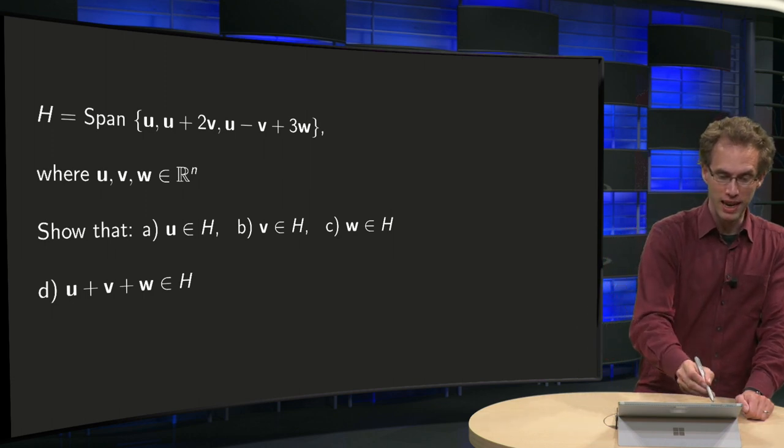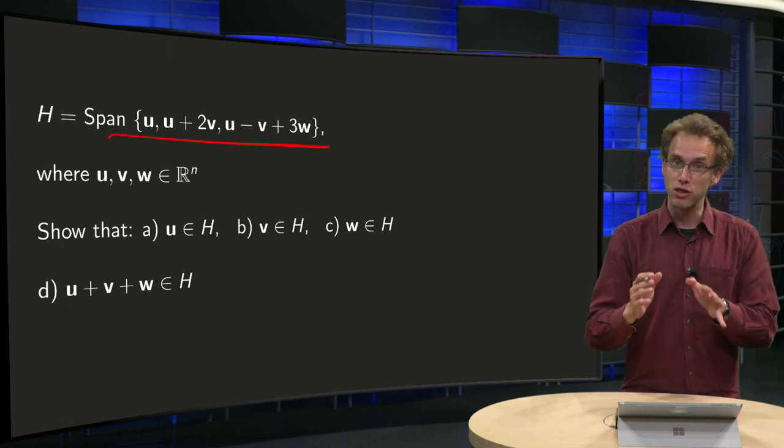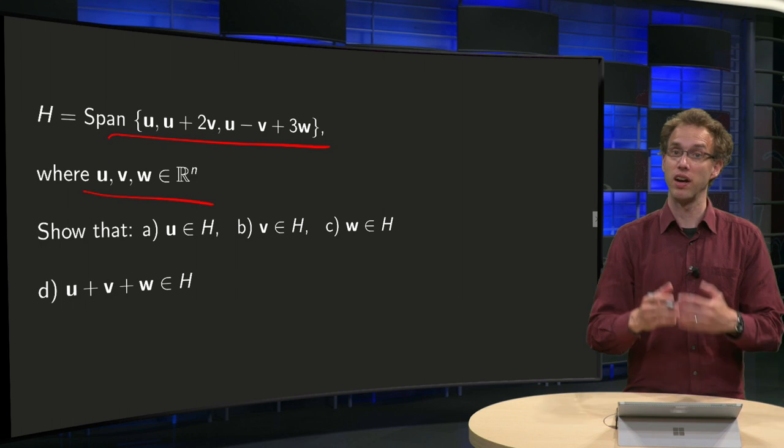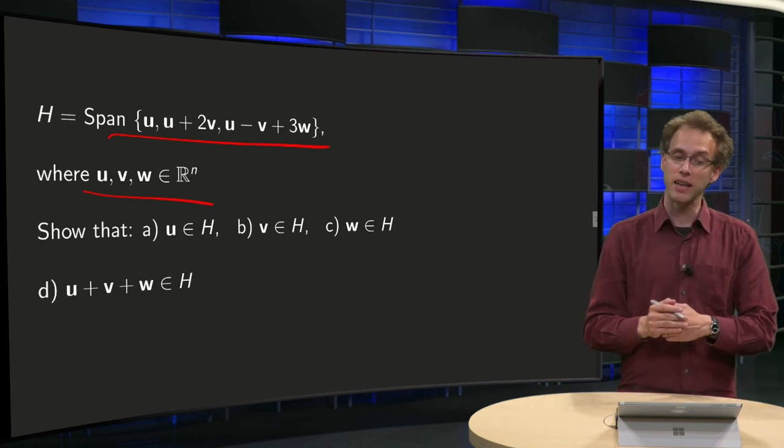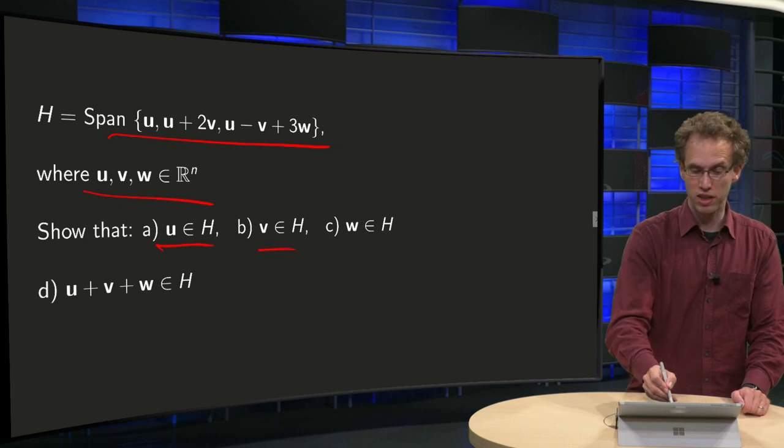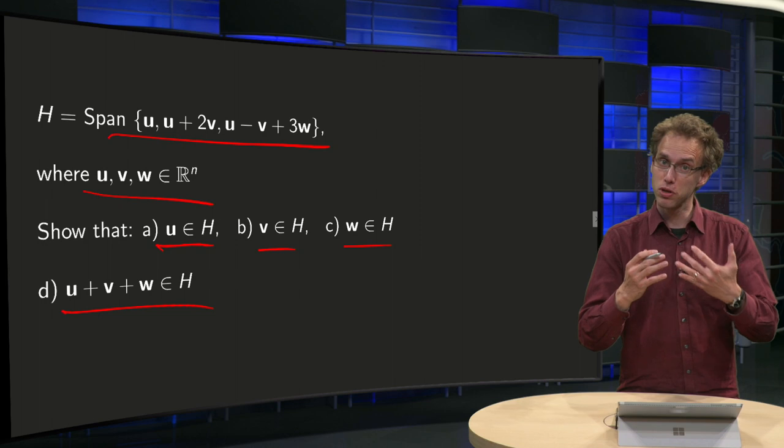You have a subspace H given by the span of some vectors. Vectors U, V and W are not specified, only given that they are in Rⁿ. And then the question shows that U is in H, V is in H, W is in H, and the final question shows that U plus V plus W is in H.